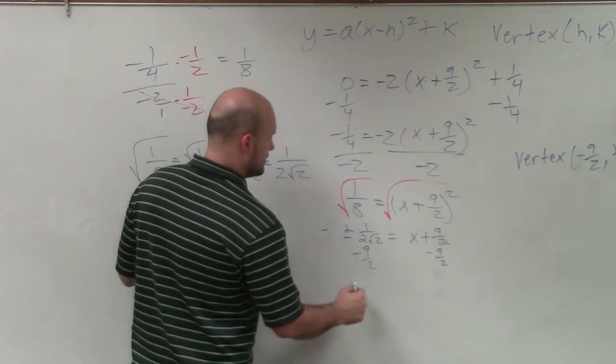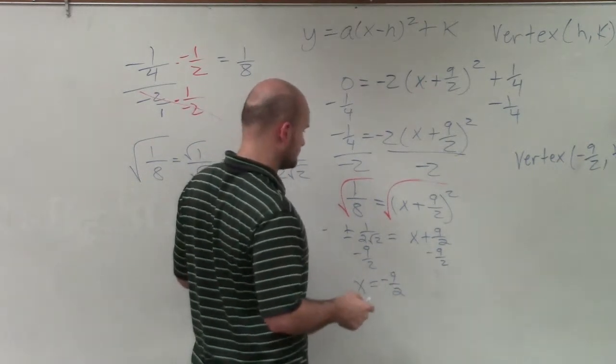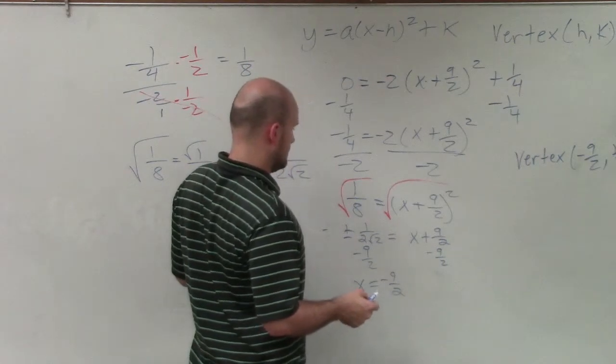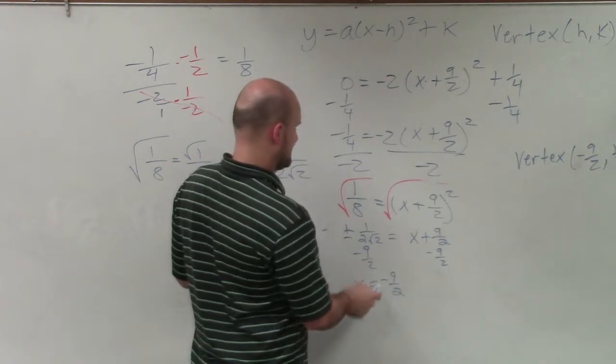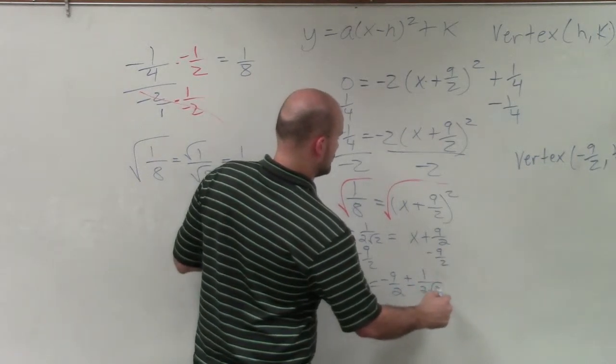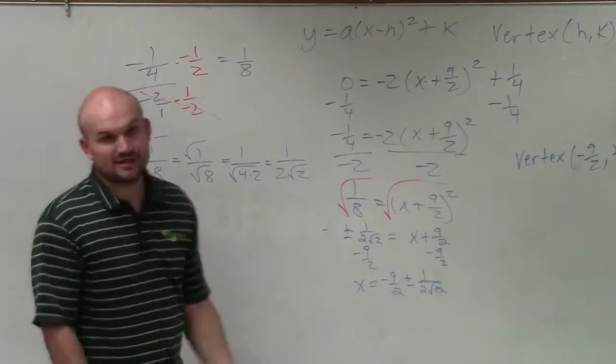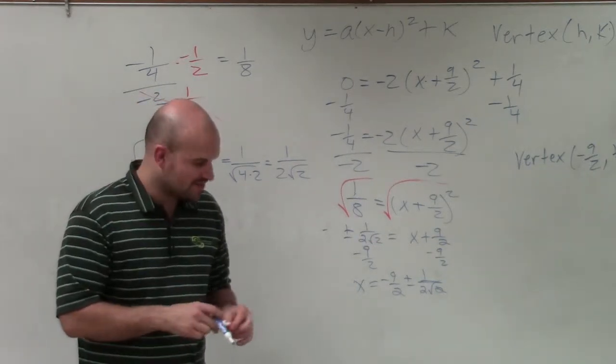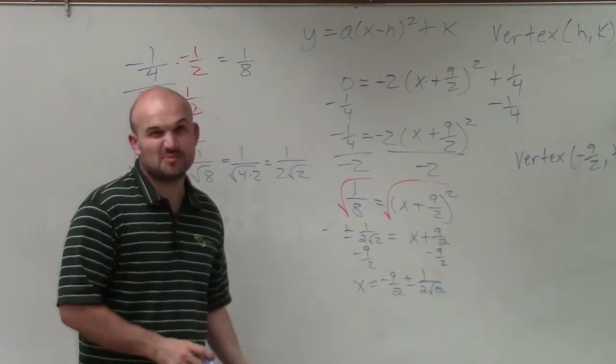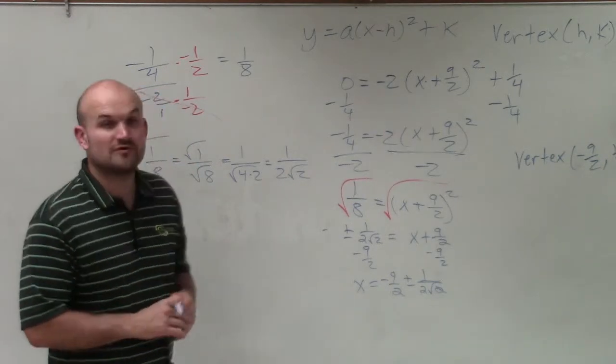And therefore, x equals negative 9 halves plus or minus 1 over 2 square root of 2. That looks like fun. You could separate those, put those in a set formation. I'm just going to leave them at that, because I know this problem was already kind of long enough. But therefore, you'd have two exact solutions for this problem. Thanks.